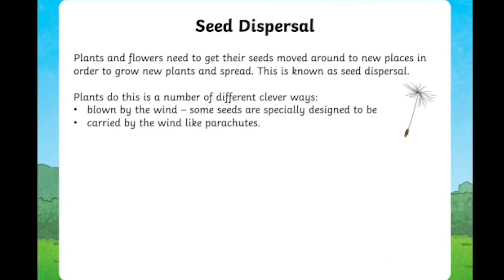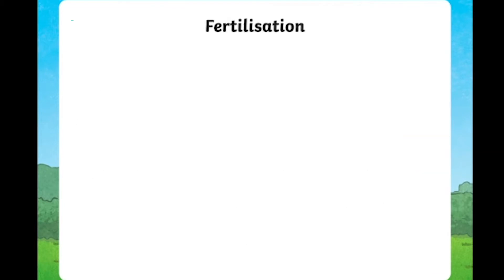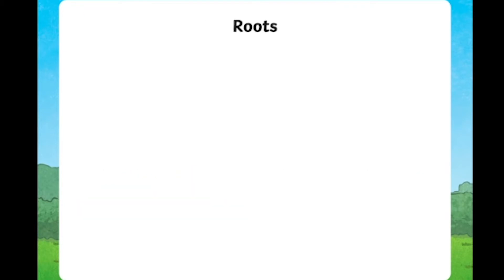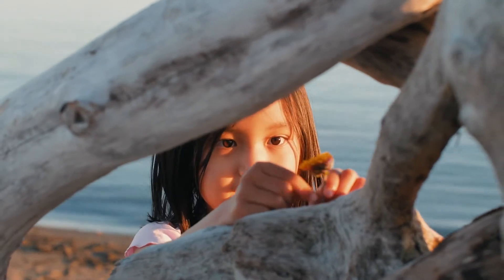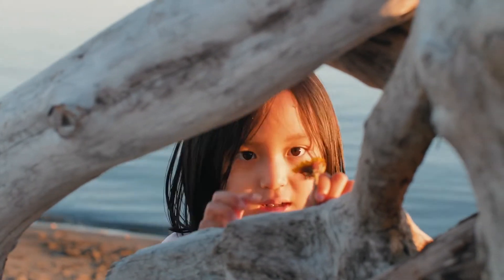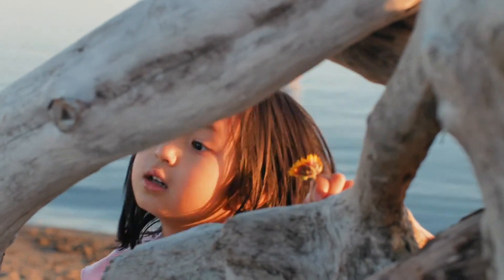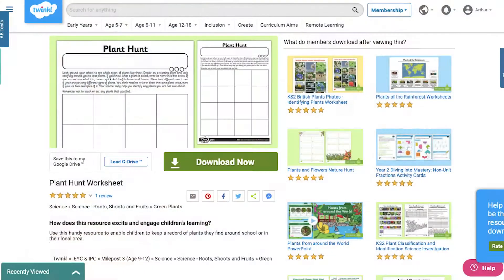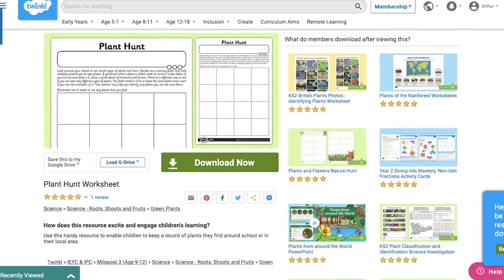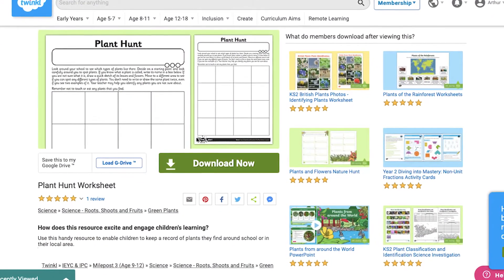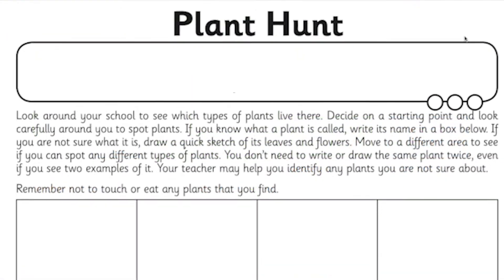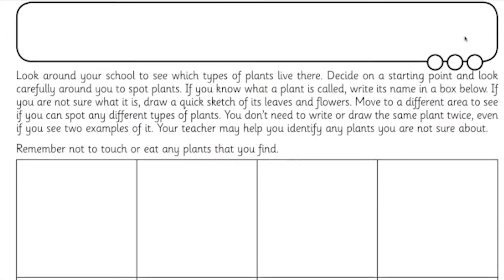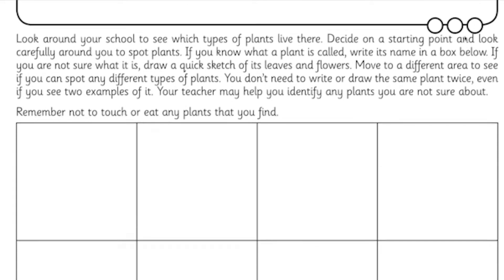One of the best ways to teach children about plants, life cycles and their parts is to go out and look for them, feel them and watch them grow. So why not go out on a plant hunt and print out our complementing worksheet so children can record their findings before bringing it back into class for a discussion.